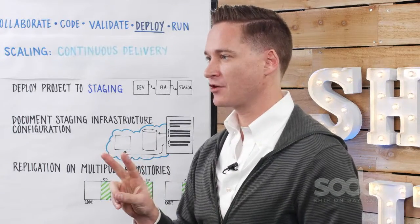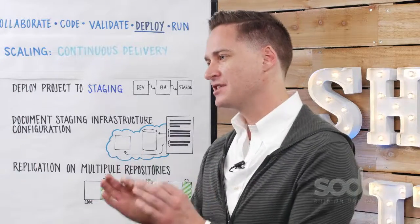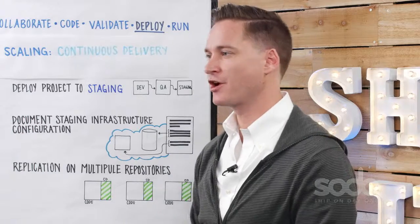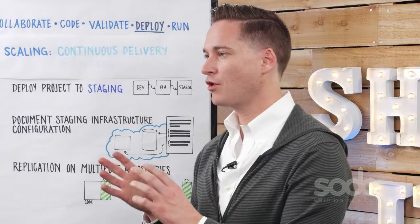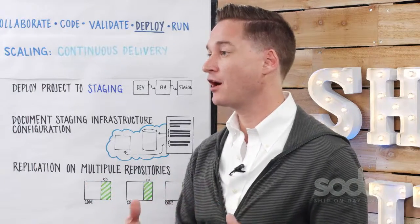The second thing that you'll want to do is document the continuous delivery system that you have — specific to your framework, but also specific to your code. Talk about how the configuration that you have in one of your projects could be abstracted and applied to other projects that your team owns. And make it specific enough to your team that any developer on your team could be able to effectively write their own configuration.